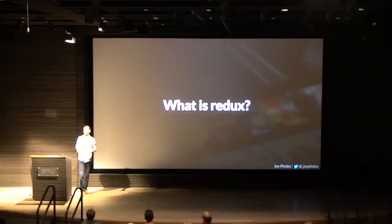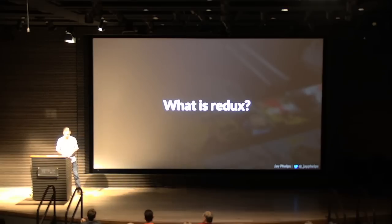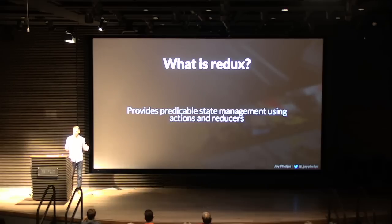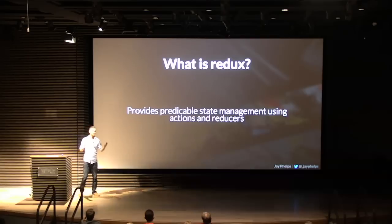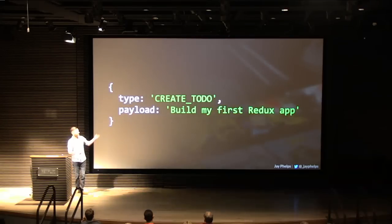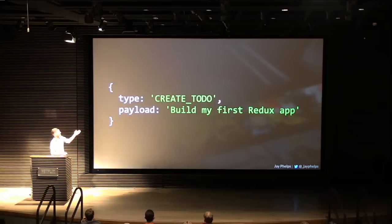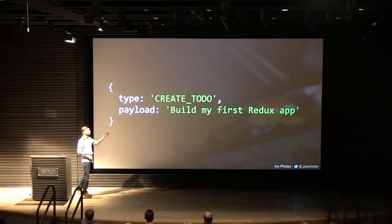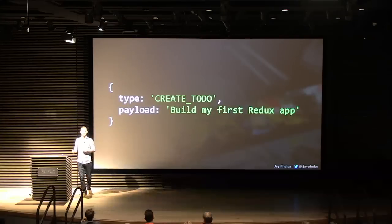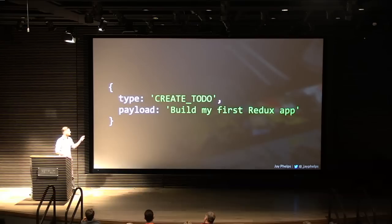What is Redux? This talk is not going to teach you all about Redux or even all about RxJS, because both of those things are mega talks on their own. But I'll give you a quick crash course. Redux provides predictable state management using things called actions and reducers. An action describes something that has or should happen, but it doesn't say how. For example, a create-to-do action has the intent — you want to create a to-do — and the content for that to-do, but it doesn't say go to the server or store in a database. There's no async stuff, no side effects. It's completely serializable as an intent.